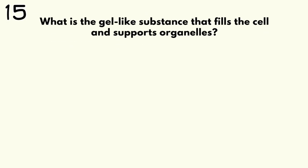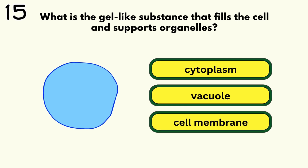Number 15. What is the jelly-like substance that fills the cell and supports all the organelles? Cytoplasm.